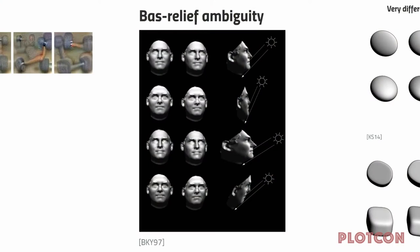This is called bas-relief ambiguity — that really looks like Steve Jobs, but it's not. On the far right you'll see that all of these geometries are profoundly different. However, when you look at them head on and move the lighting function to a location that offsets the geometric skew, all of these geometries rasterize identically. So here we have four substantially different geometries that look the same when you render them in a computer.